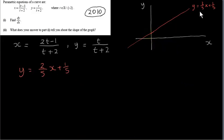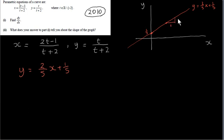Here is a graph of y = (2/5)x + 1/5. When x is 0, y is 1/5. If we pick any point on the line and increase x by 1 unit, y increases by 2/5. It's a line with a positive slope of +2/5, going in this direction.